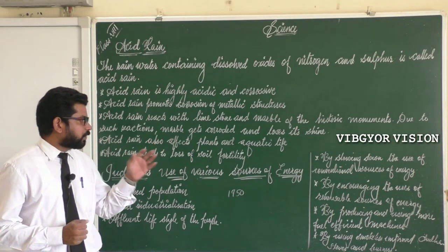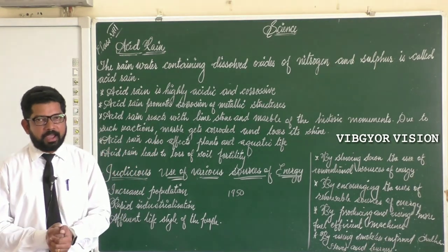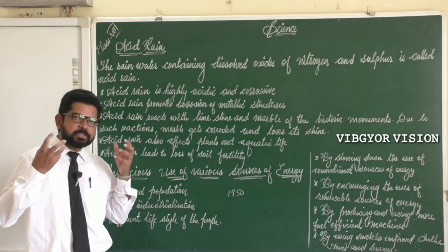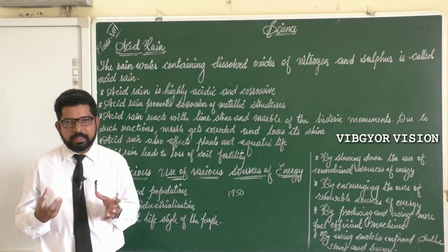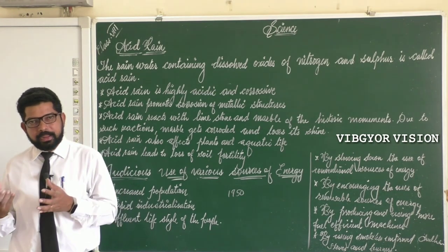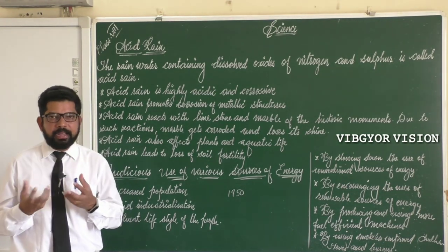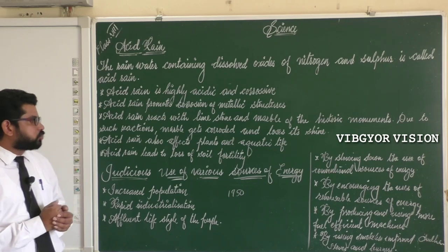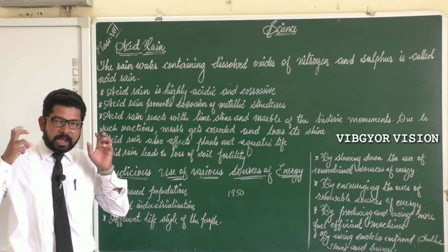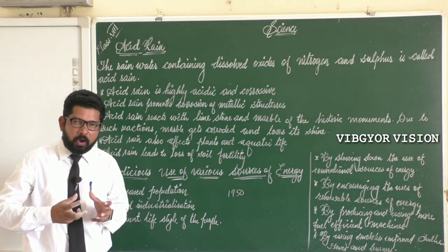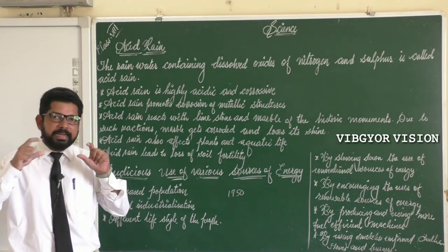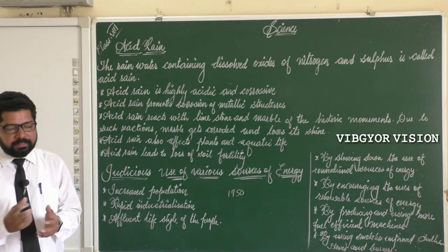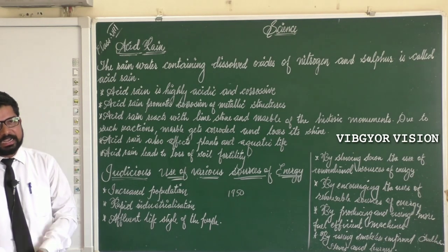Acid rain also affects plant and aquatic life — the organisms and animals living in marine water or river water are affected. Additionally, acid rain leads to loss of soil fertility, as it increases the acidity of the soil and thereby decreases its fertility. These are the harmful effects of acid rain.